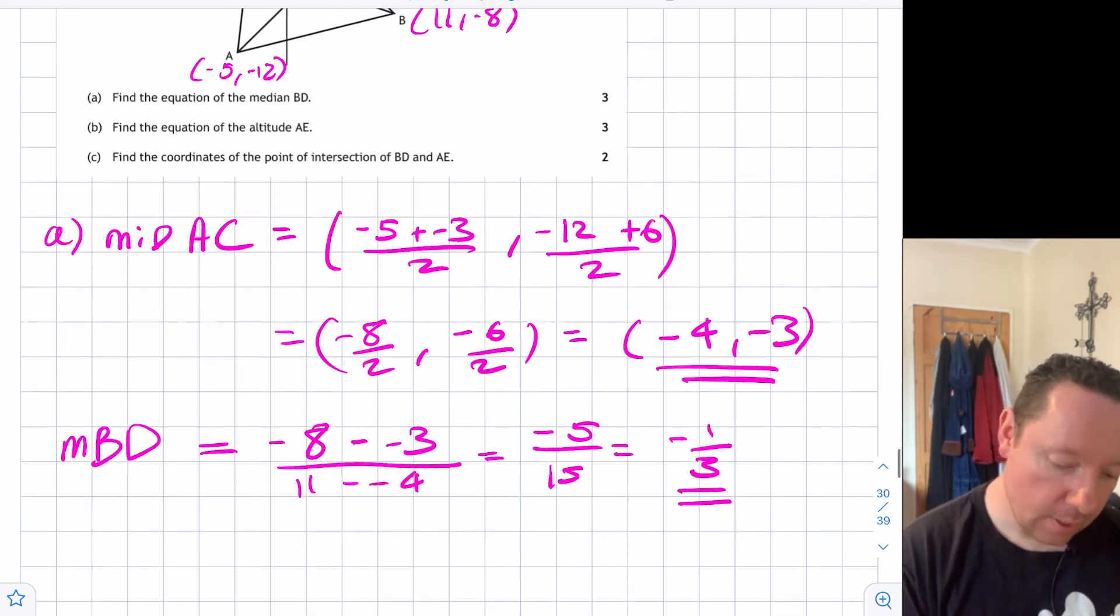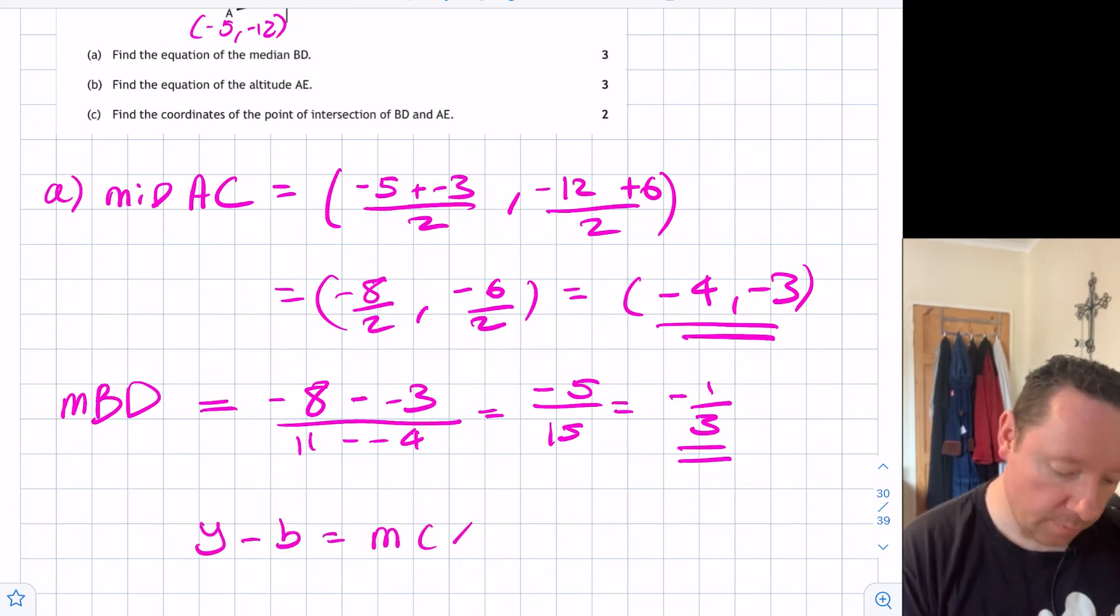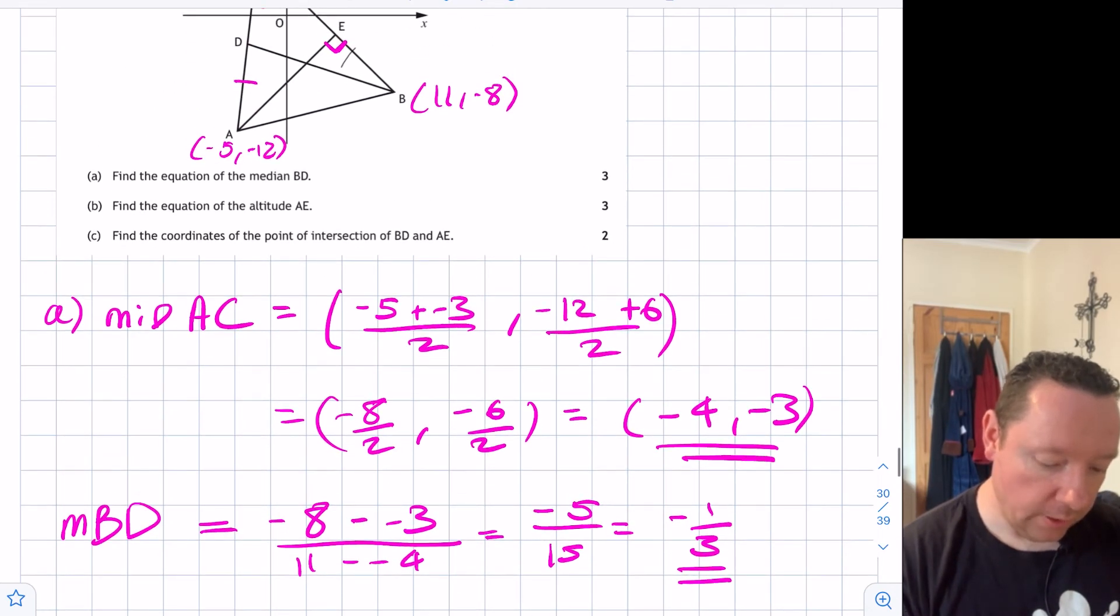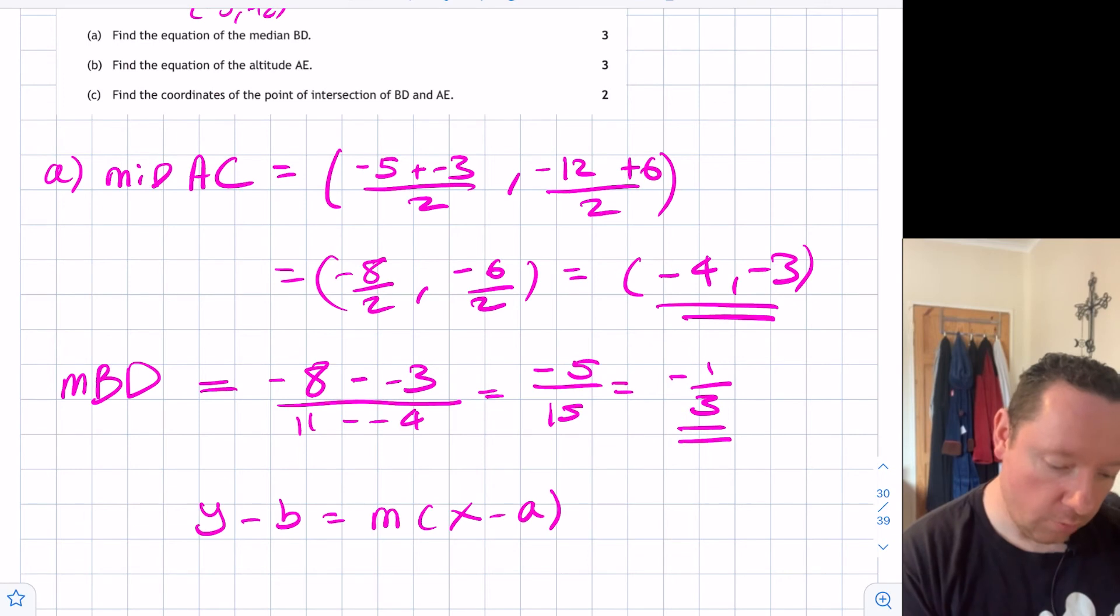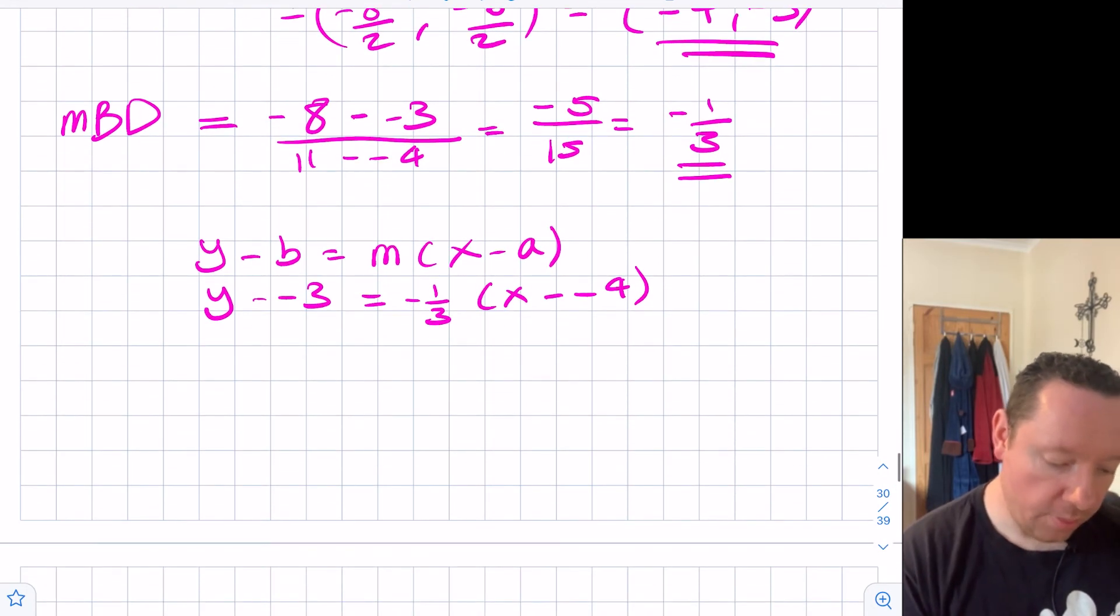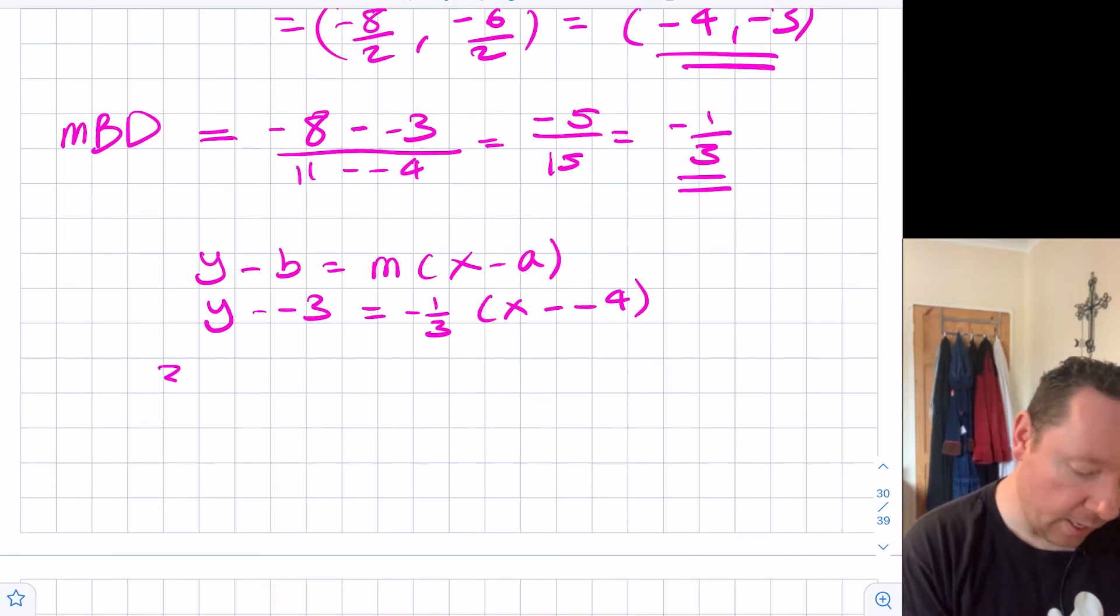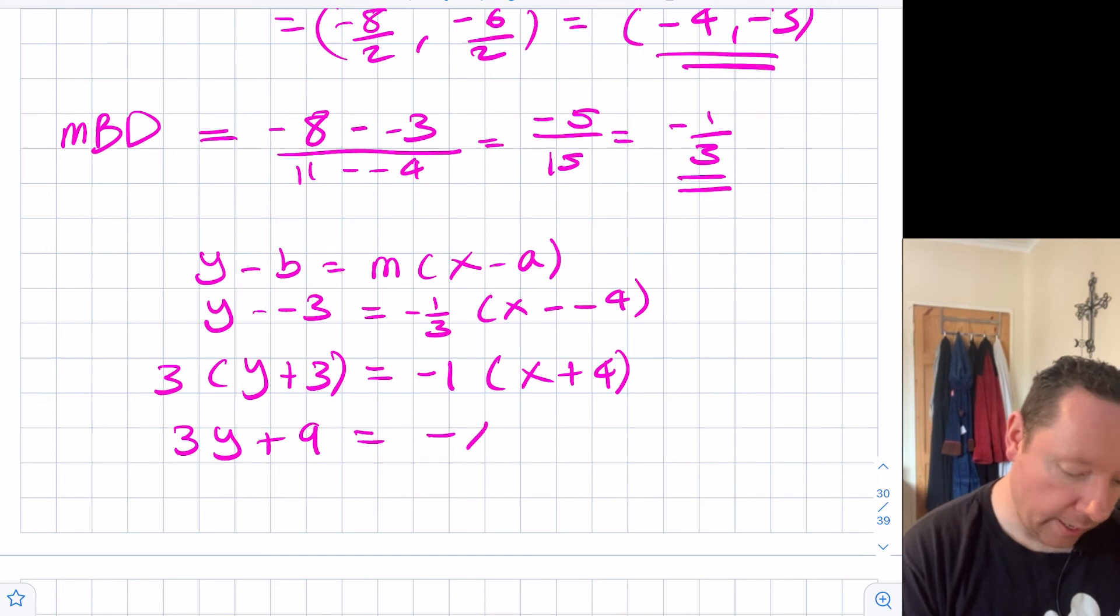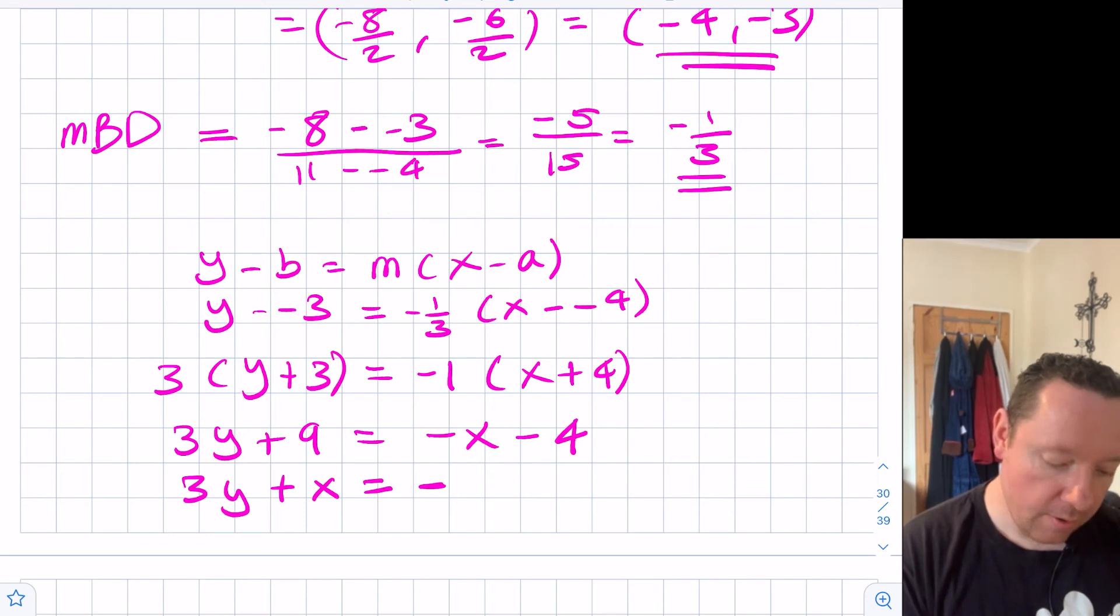We can use y minus b equals mx minus a. Any of the two points you want, either B or D. I'll use the midpoint. y minus -3 equals -1/3 times x minus -4. Multiplying through by 3, we get 3(y plus 3) equals -1 times (x plus 4). Or 3y plus 9 equals -x minus 4. Or 3y plus x equals -13. And there's part A done.